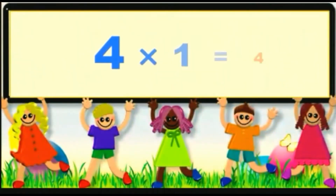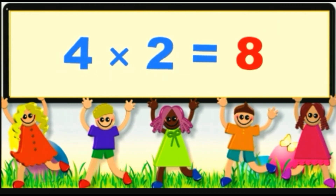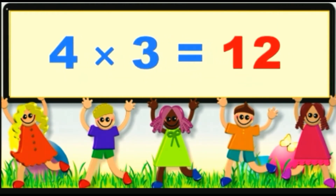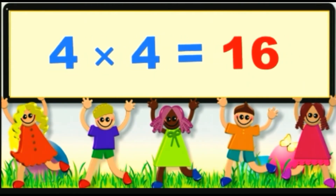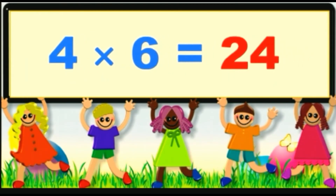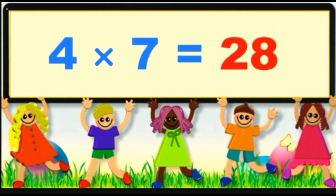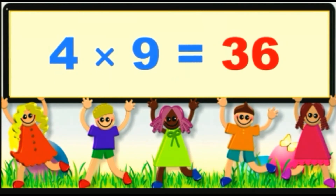Table of 4. 4 1s are 4. 4 2s are 8. 4 3s are 12. 4 4s are 16. 4 5s are 20. 4 6s are 24. 4 7s are 28. 4 8s are 32. 4 9s are 36. 4 10s are 40.